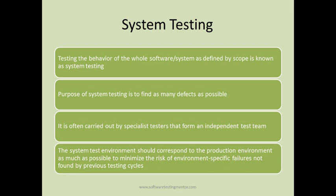The system test environment should correspond to the production environment as much as possible to minimize the risk of environment-specific failures not found by previous test cycles. Since the software going into system testing has almost all requirements implemented and will go into production as-is (with defects fixed), the test environment should be very close to the production environment to ensure the system works properly as expected.